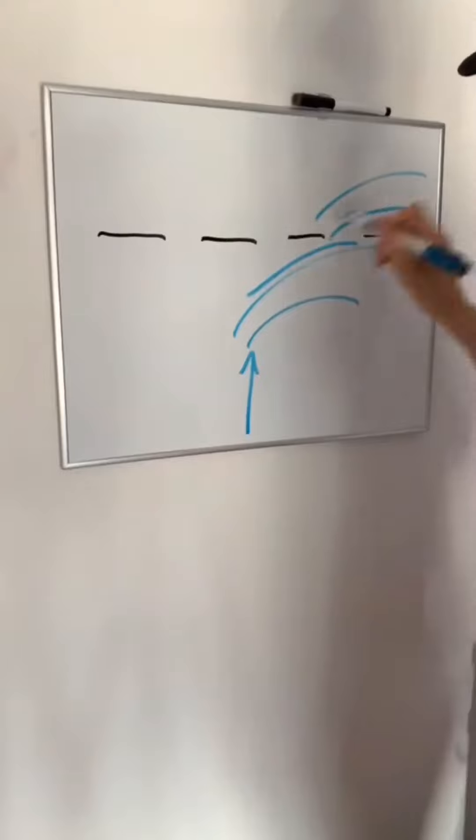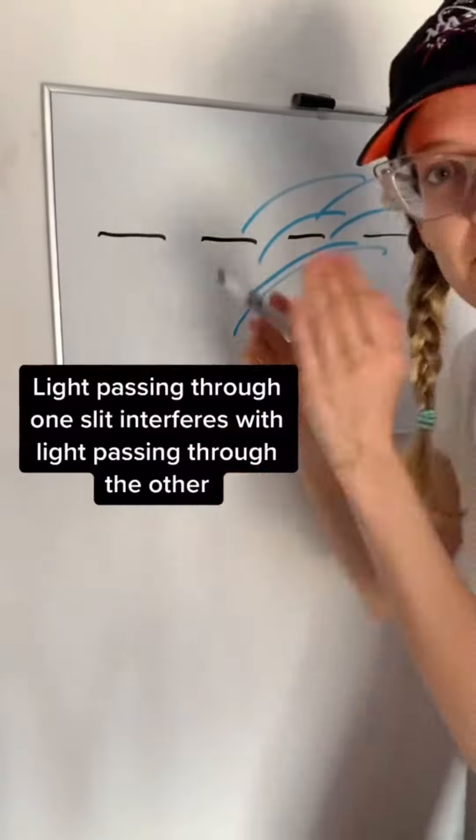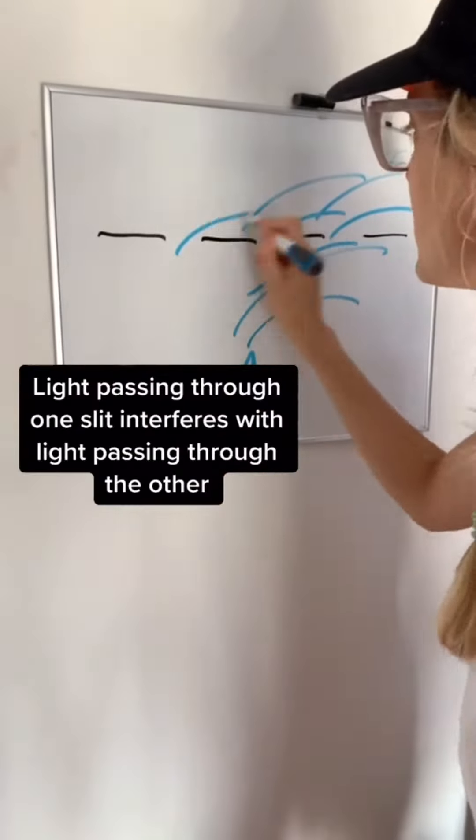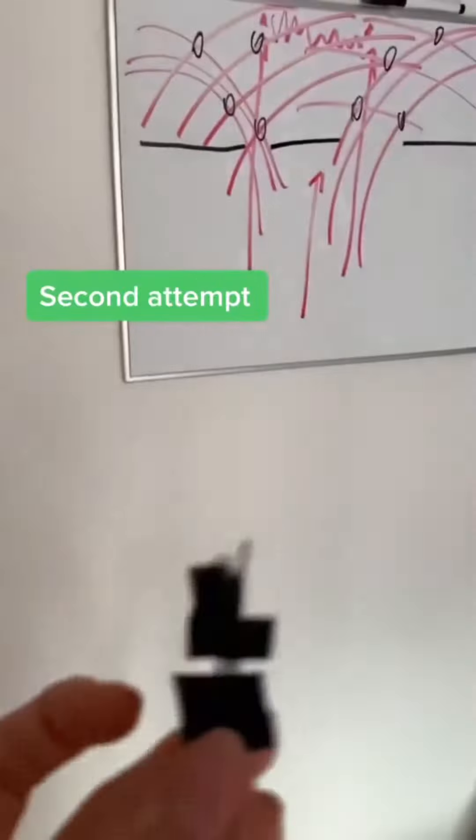In some areas, one wave is going to interrupt another wave, and that's the wave interference pattern. Then there was a proposal by Albert Einstein that said that light also behaves like a particle.